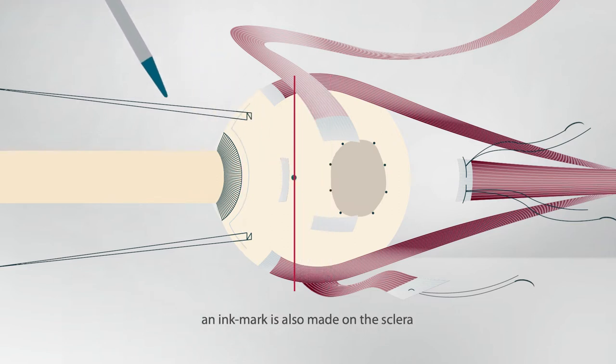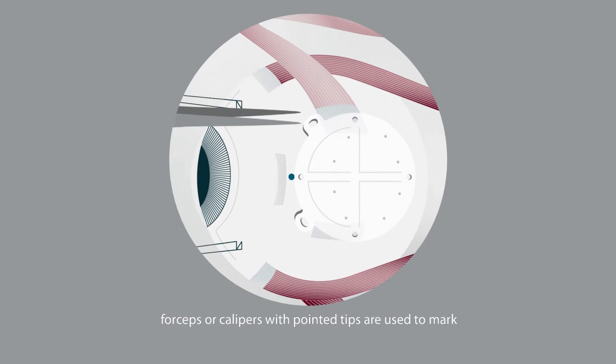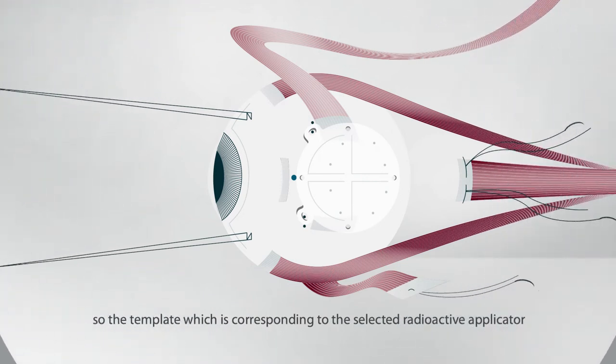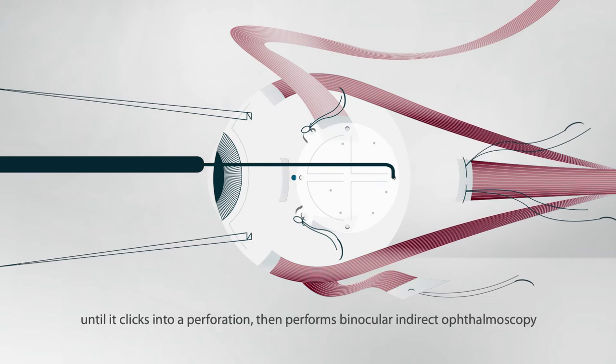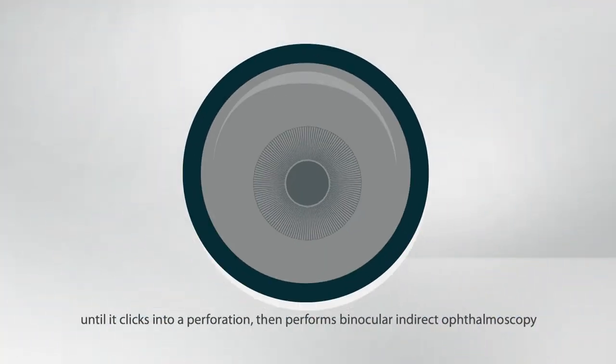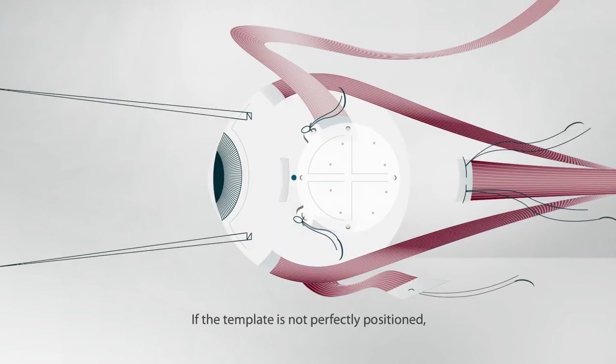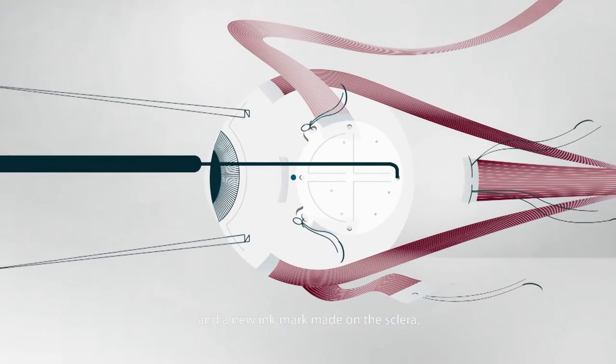If a D'Amato template is available, forceps or calipers with pointed tips are used to mark the entry and exit points of each suture, so the template which is corresponding to the selected radioactive applicator can be sutured to the sclera with releasable bows. Now the surgeon slides the right-angled transilluminator down a groove until it clicks into a perforation, then performs binocular indirect ophthalmoscopy to elicit the sunset sign while assessing the distance between the light spot and the tumor margin, ensuring that the tumor, including safety margin, is completely covered by the template. If the template is not perfectly positioned, it can be adjusted using the transilluminator as a hook and a new ink mark is made on the sclera.